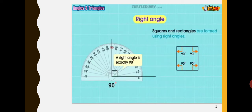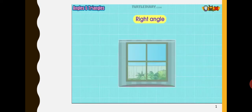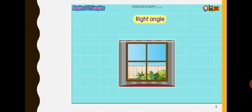Squares and rectangles are formed using right angles. Let's look at a few examples. You are looking out the window of your house. You notice that the window panes are formed by right angles.